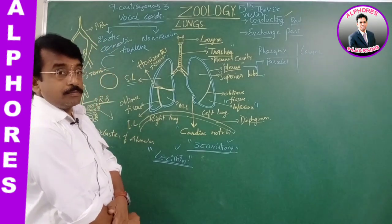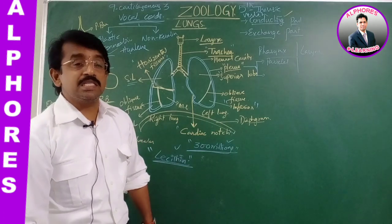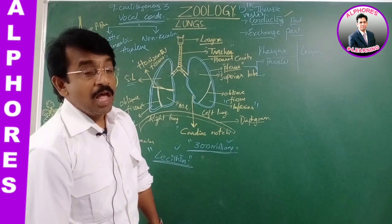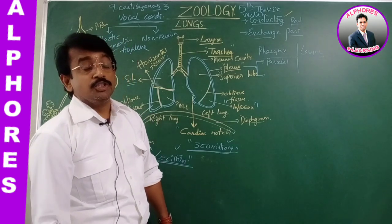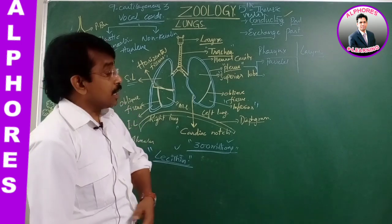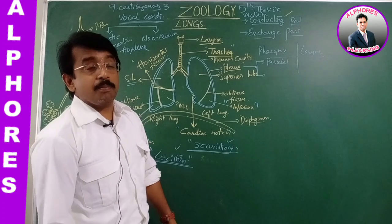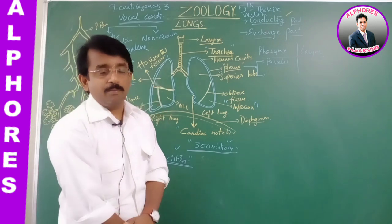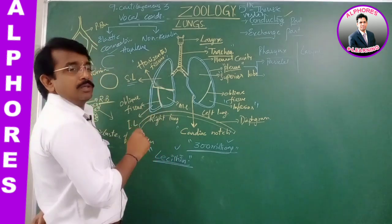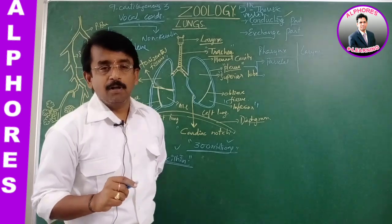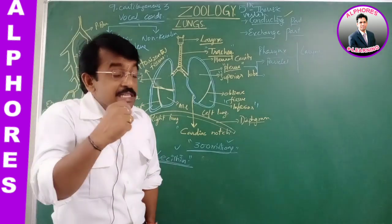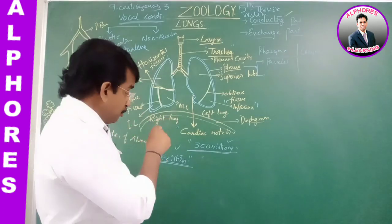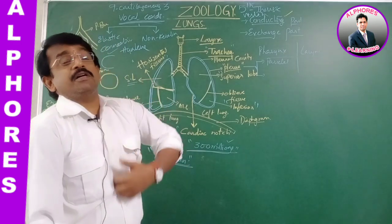The lungs contain alveoli. Alveoli are made up of simple squamous epithelium and are highly vascularized. These alveoli are considered the exchange part — the thinner the alveoli, the higher the exchange. Altogether there are 300 million alveoli in the lungs. The larger the surface area, the higher the exchange, making the lungs efficient at gas exchange.